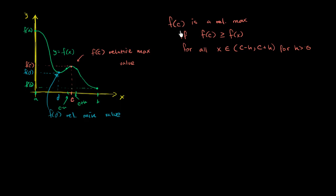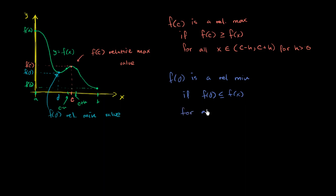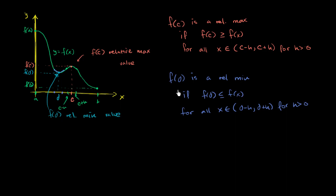I encourage you to pause the video and write out the more formal definition of a relative minimum point. We would just write: let's take d as our relative minimum. We can say that f of d is a relative minimum point if f of d is less than or equal to f of x for all x in an open interval between d minus h and d plus h, for h greater than 0. So you can find an interval here — this is d plus h, this is d minus h — and f of d is always less than or equal to any of the other values in that interval. That's why we say it's a relative minimum point. In everyday language: relative max if the function takes on a larger value at c than for the x values around c, and relative minimum value if the function takes on a lower value at d than for the x values near d.